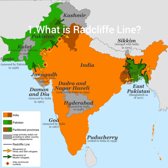The first question is: what is the Radcliffe Line? The Radcliffe Line is basically a border between India and Pakistan. It was formed in 1947 when India and Pakistan were separated based on a draft created by Sir Cyril Radcliffe, and thereafter the Radcliffe Line was made.